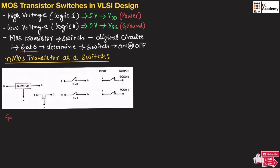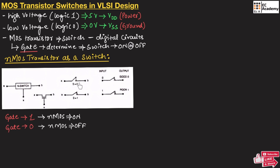When the gate input is 1, the transistor will be on, so the switch closes and current can flow from source to drain. When the gate terminal is 0, the NMOS will be off and it will act as an open switch. So, when gate is logic 1, NMOS acts as a closed switch, and when gate is logic 0, NMOS acts as an open switch.